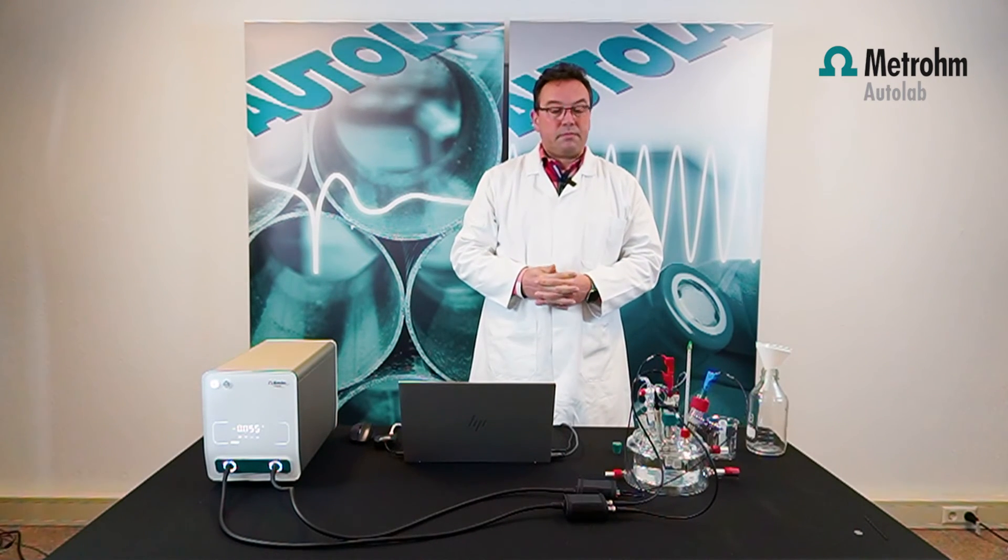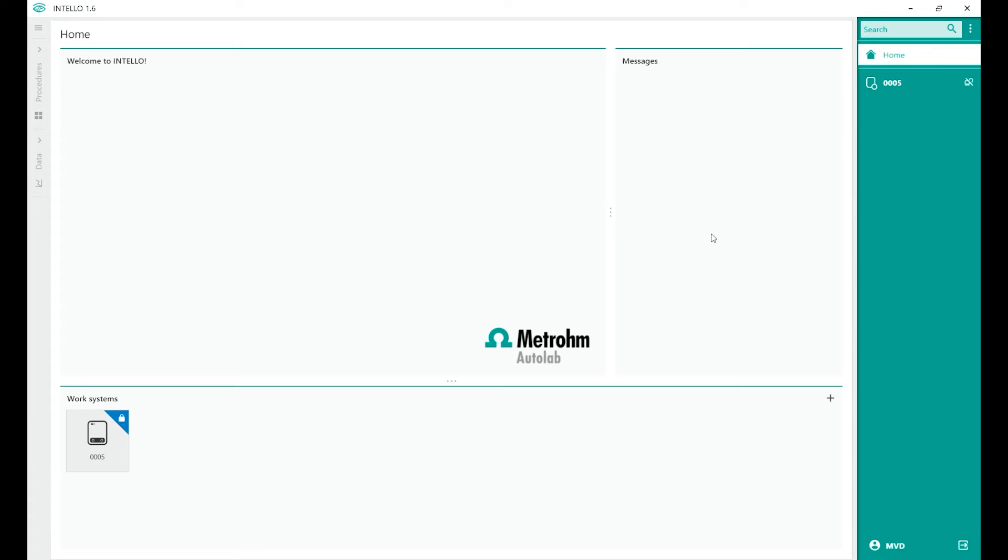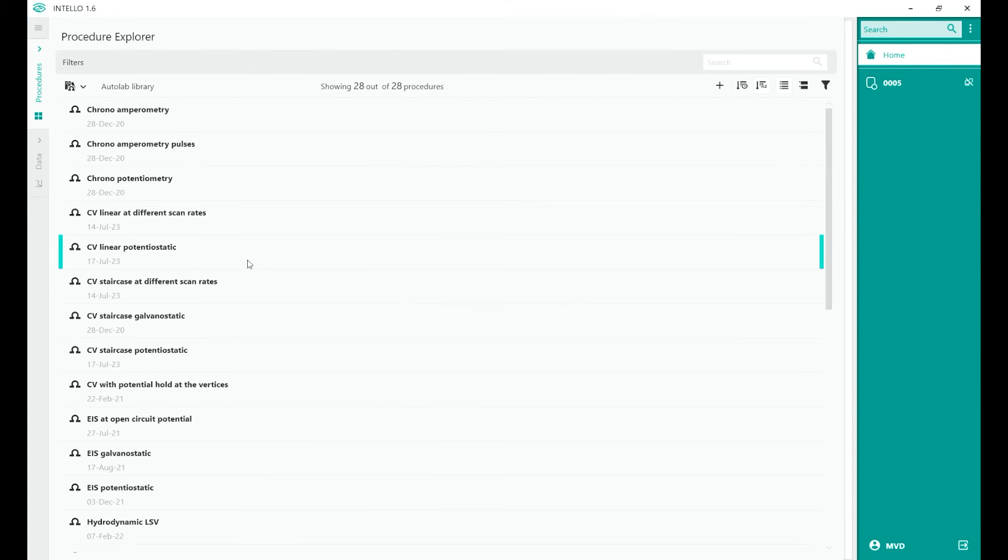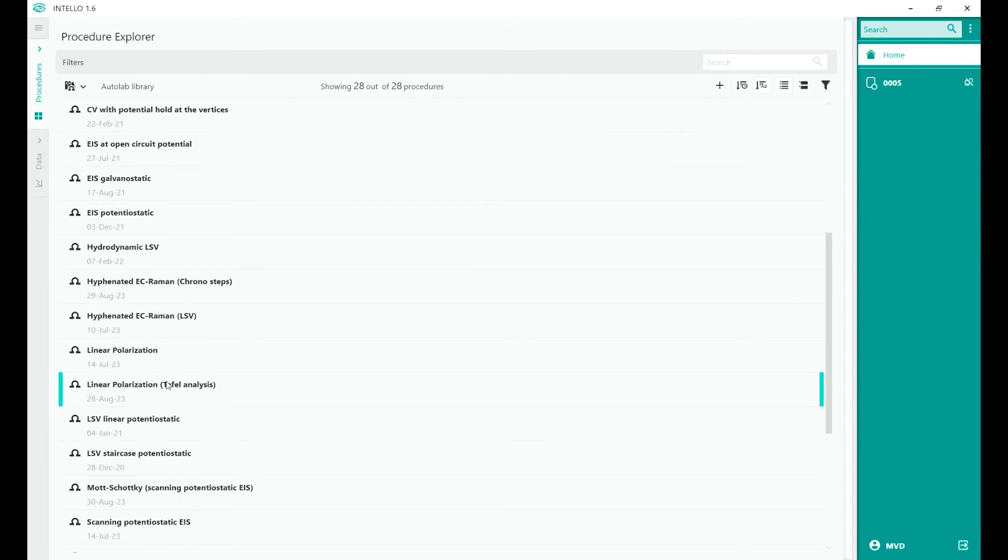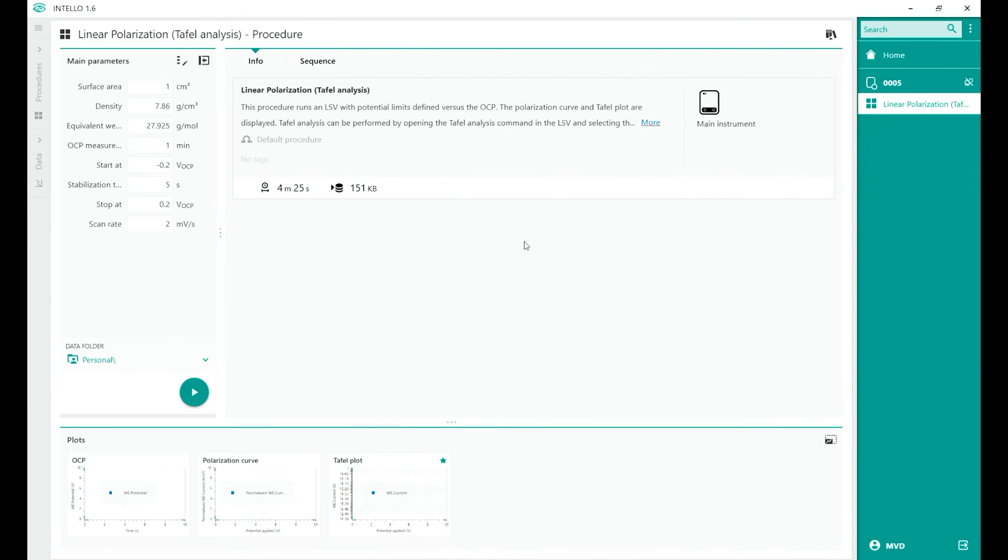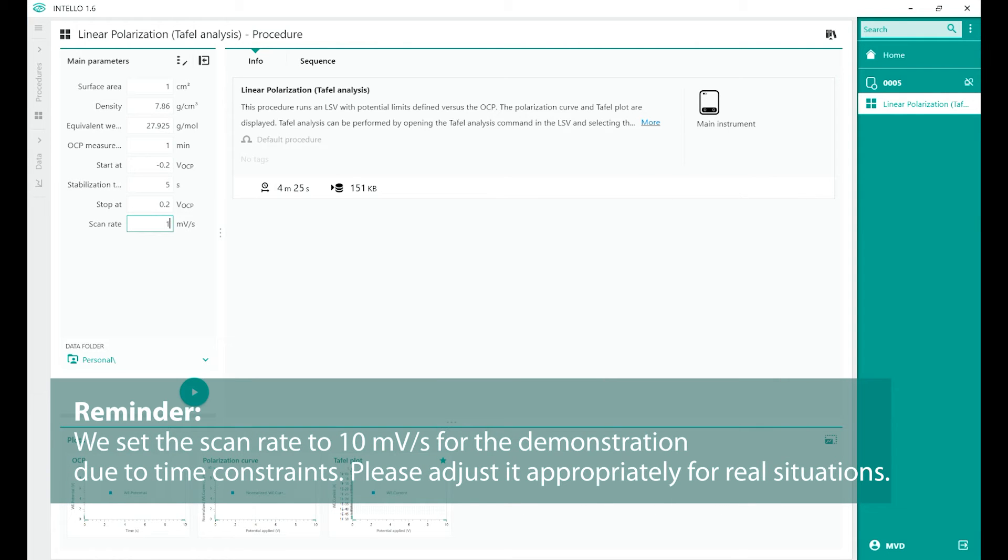Now we go to the software. In the software, there's a selection. You can go to the procedure. There's a standard procedure, default procedure, linear polarisation TAFEL analysis. Select that one. First, we're going to adjust the scan rate. It's now set to two millivolts a second, and we are going to adjust it to 10 millivolts a second. This is just for speeding up the process.